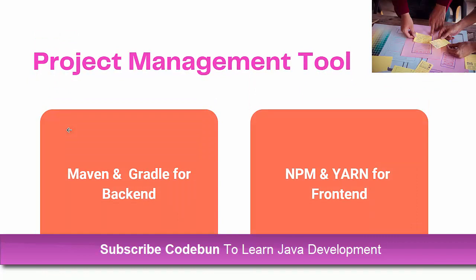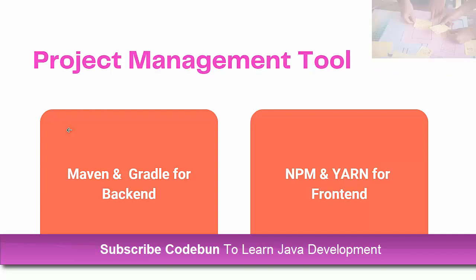For project management tools, you should know Maven — about 90% of Java applications run on Maven. Maven is a build automation tool that generates a pom.xml file when you create a new project, where you manage all versions and configurations. For the front-end, you should know npm — Node Package Manager — which lets you install new plugins and support in your application.